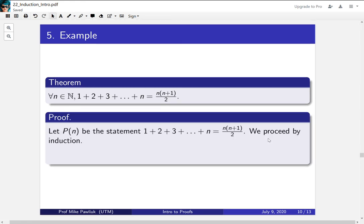So let P(n) be the statement 1 + 2 + 3 + ... + n equals n(n+1)/2. Note that P(n) is the statement for this n, and our goal is to show that for all n, P(n) is true. Let's proceed by induction.